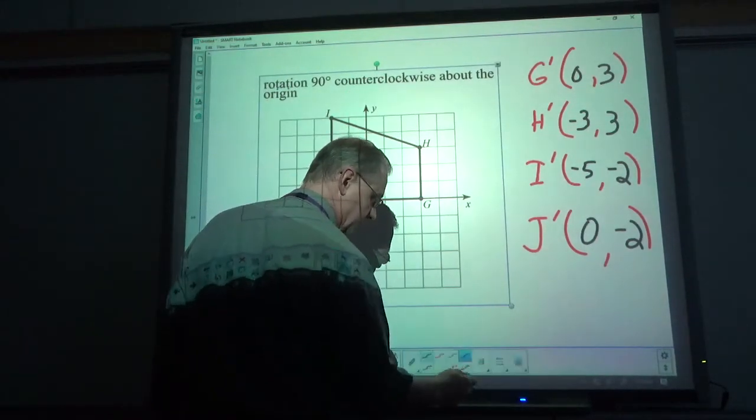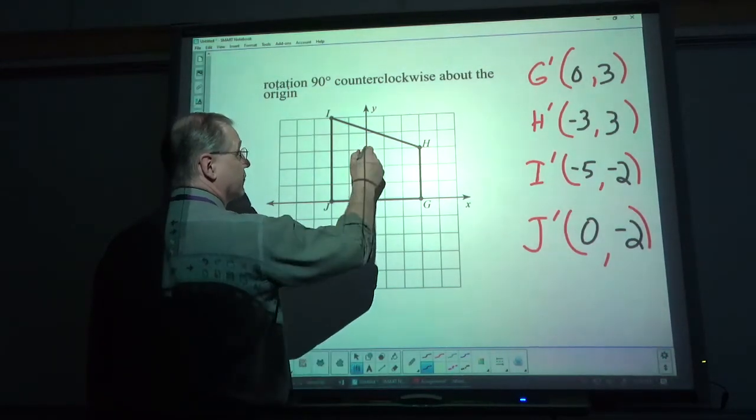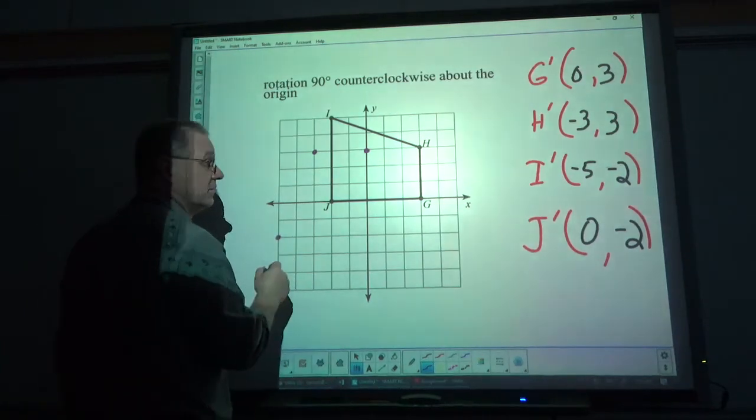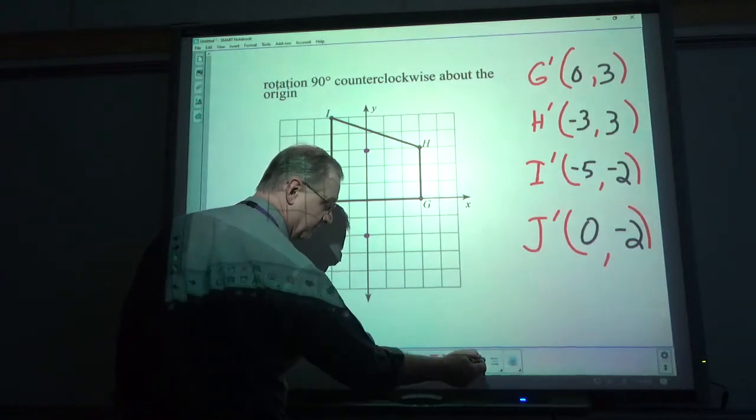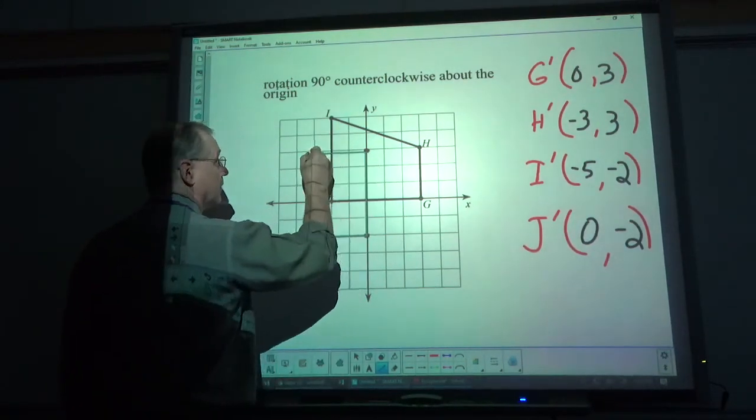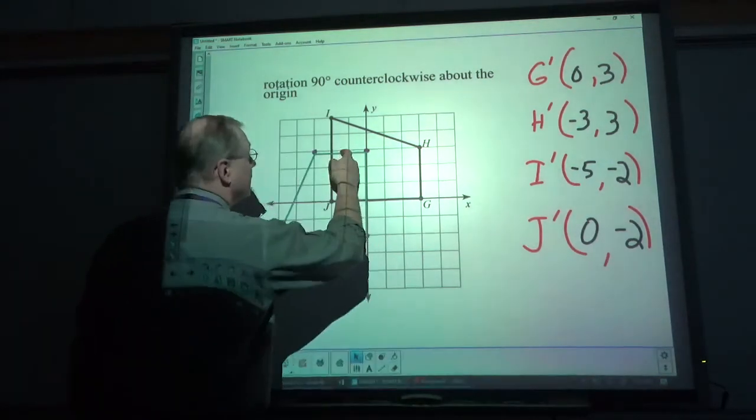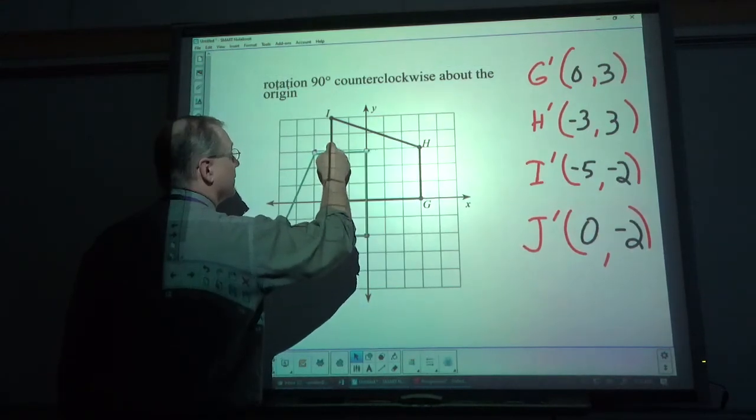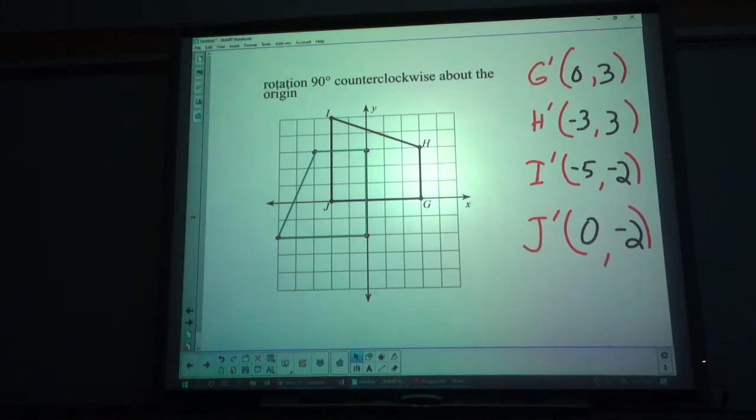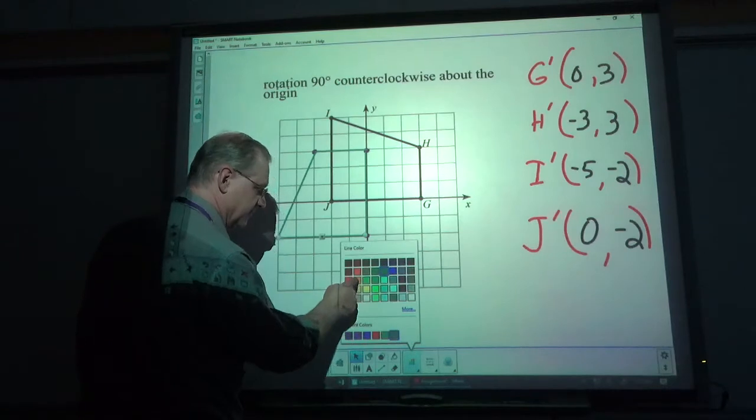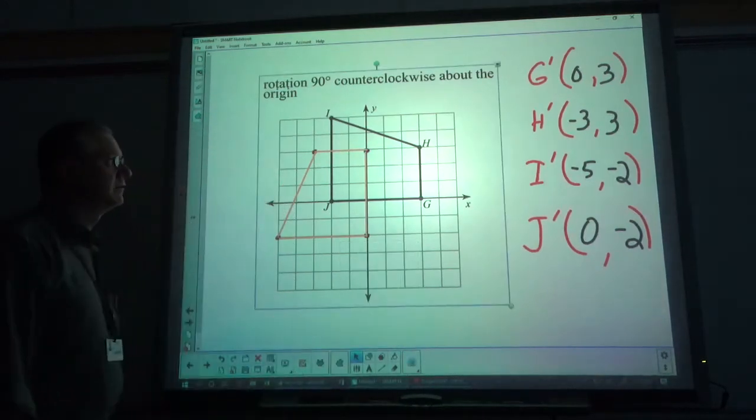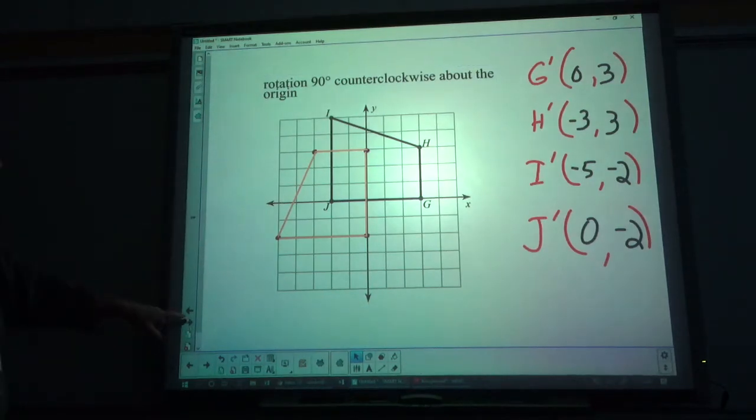And plot the points. 0, 3. Negative 3, 3. Negative 5, negative 2. Zero, negative 2. Connect them up. Oh, that one was off. How'd that get so off? There we go. That's better. And there you have it. Your new point. Boy, that's not very bright. Let's see if we can fix that. That's a little easier to see. Much better. And there's your new image.